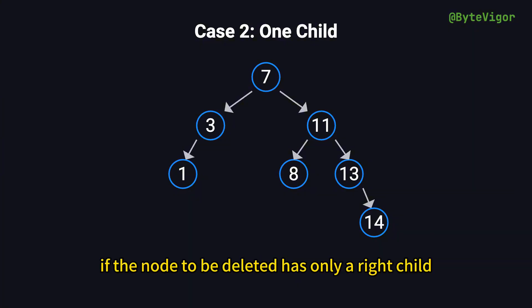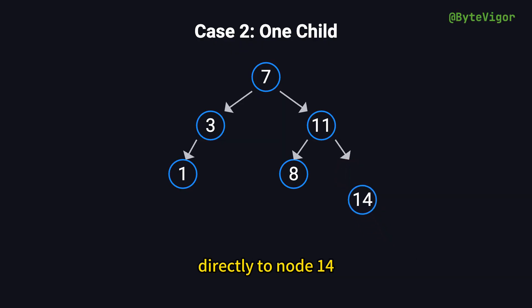Similarly, if the node to be deleted has only a right child, we link the parent to the right child. For instance, deleting node 13 means connecting node 11, the parent of node 13, directly to node 14, the right child of node 13.